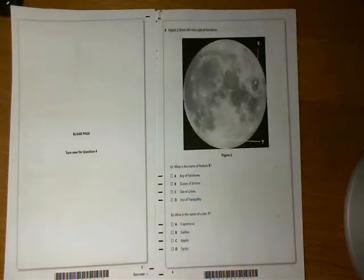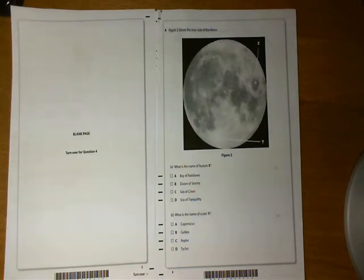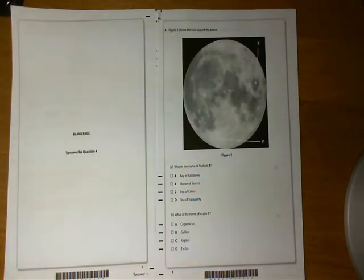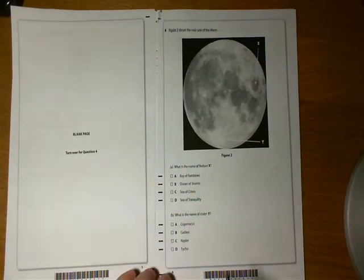This image shows the near side of the moon. What is the name of feature X? The options are: the Bay of Rainbows, the Ocean of Storms, the Sea of Crises, or the Sea of Tranquility.